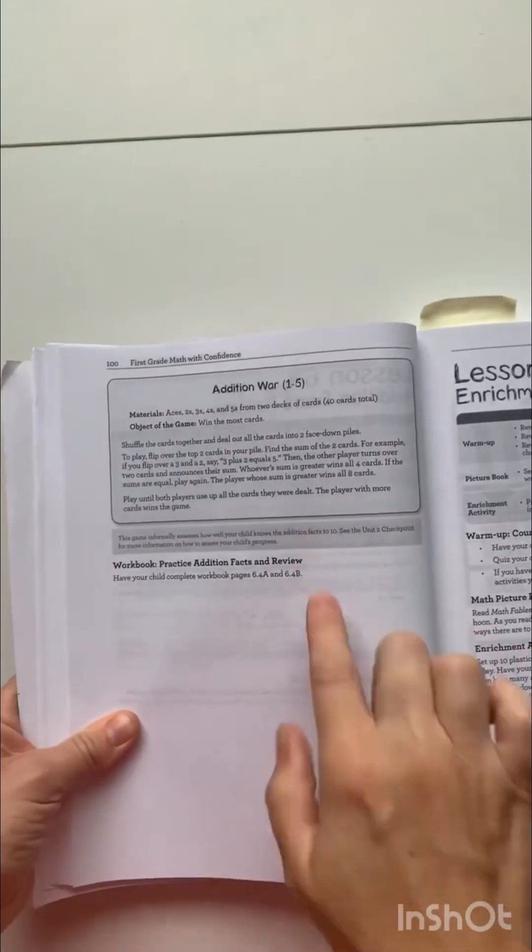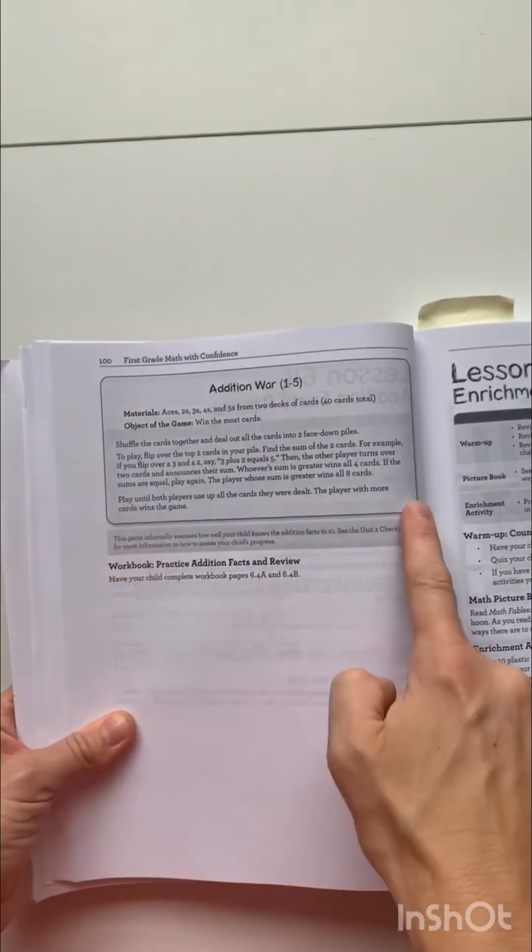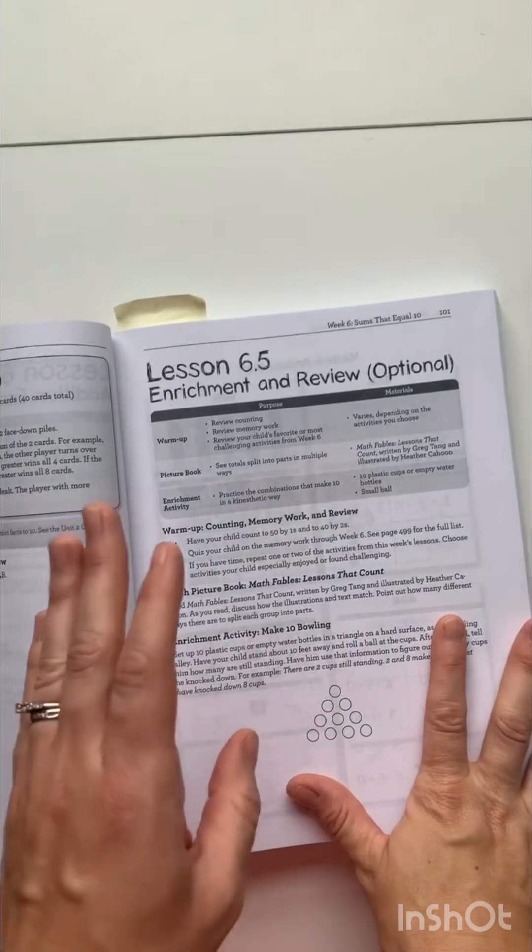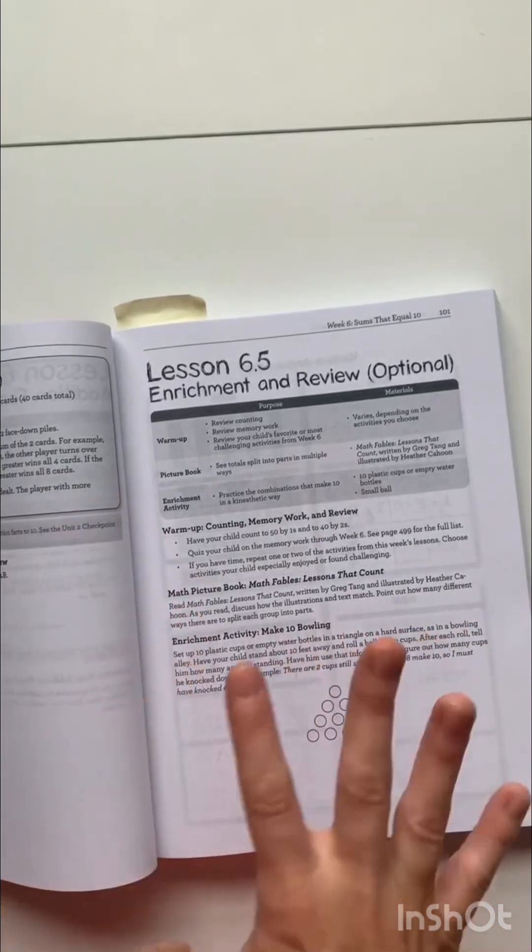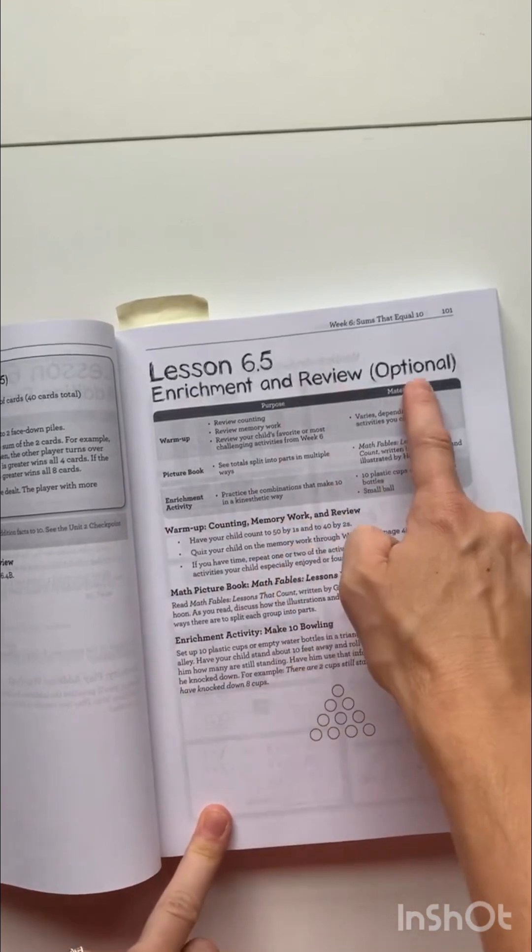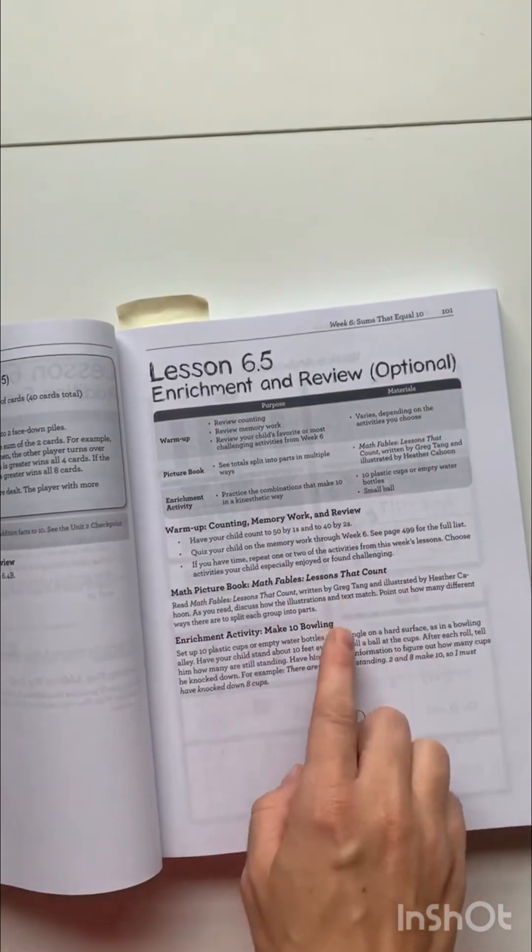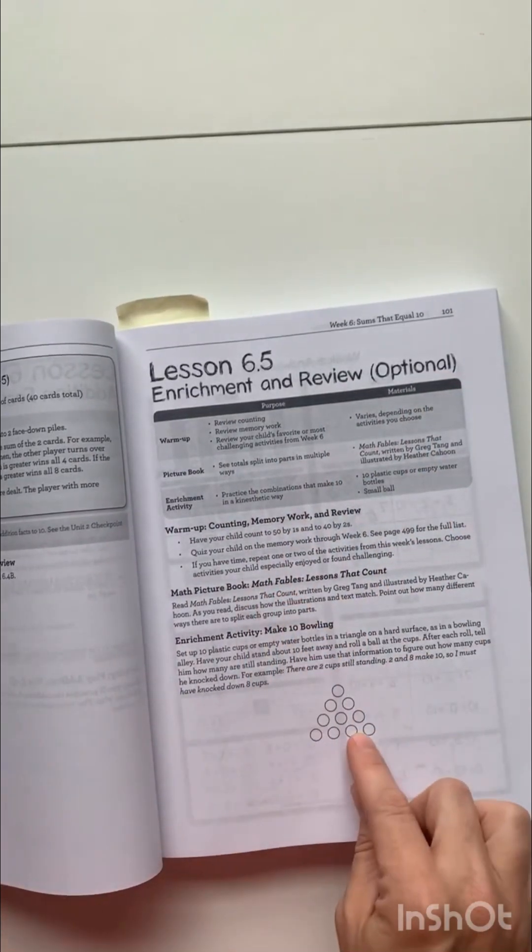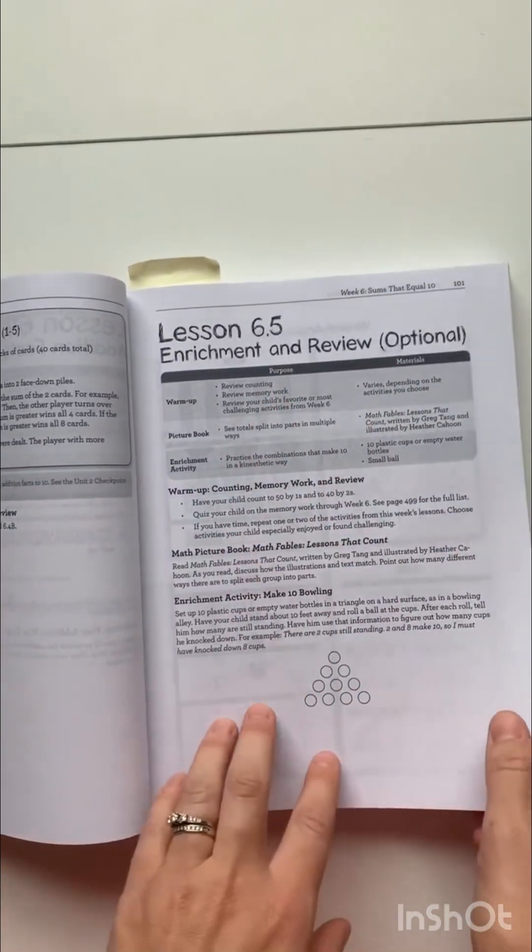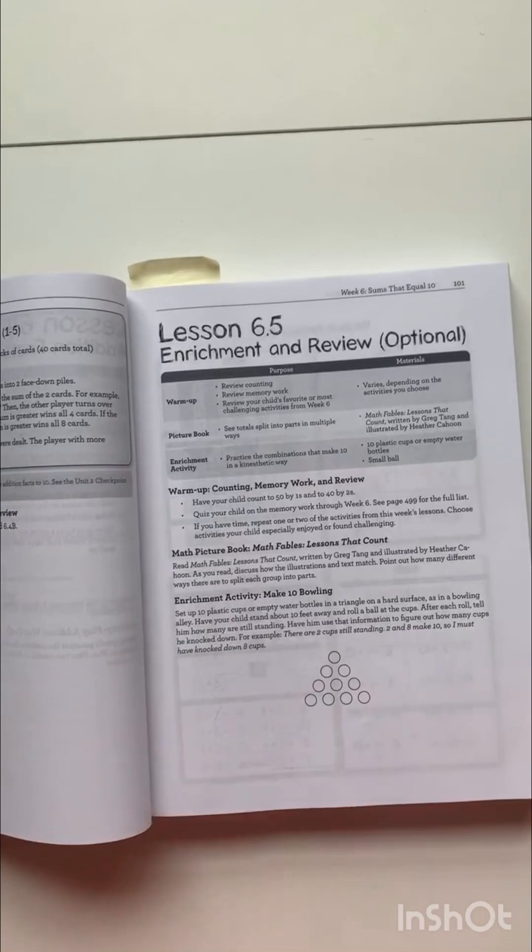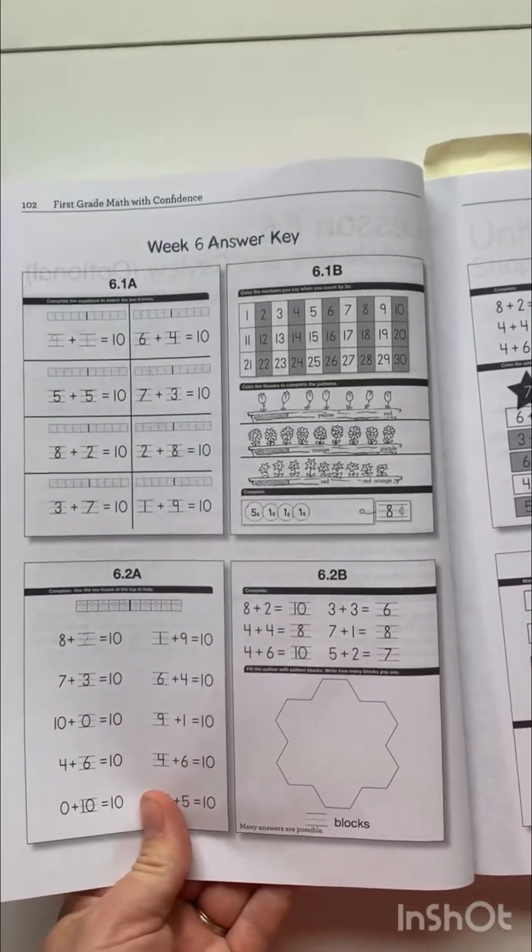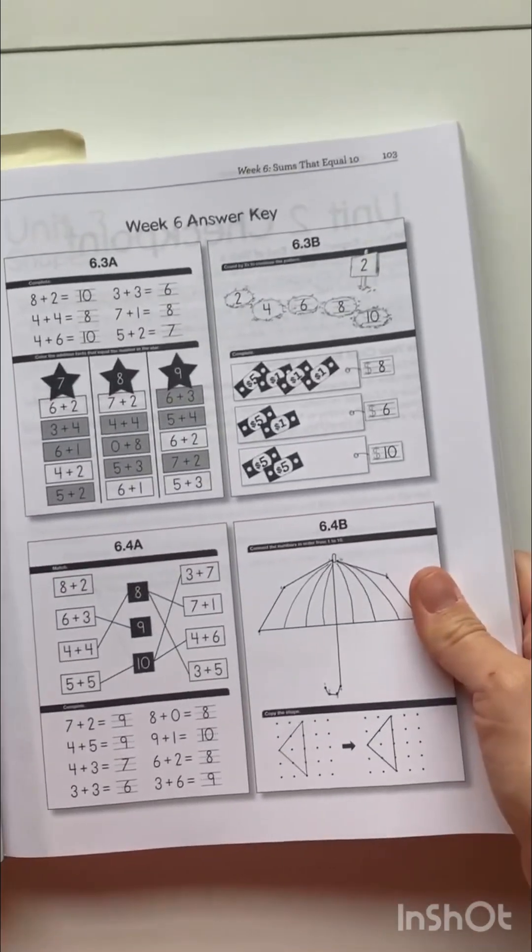I want to mention that her games are in these little boxes like this. So they're easy to see. I also want to mention that the lessons, the weeks are made up into four day weeks. And on the fifth day is an enrichment and review. So this is an optional lesson. A lot of times it has a book, maybe a simple activity. I have not used this. I usually just move on to the next week unless I think something in here is necessary to help my child.